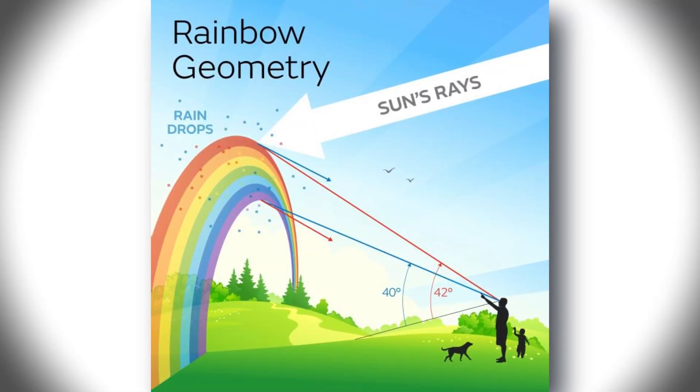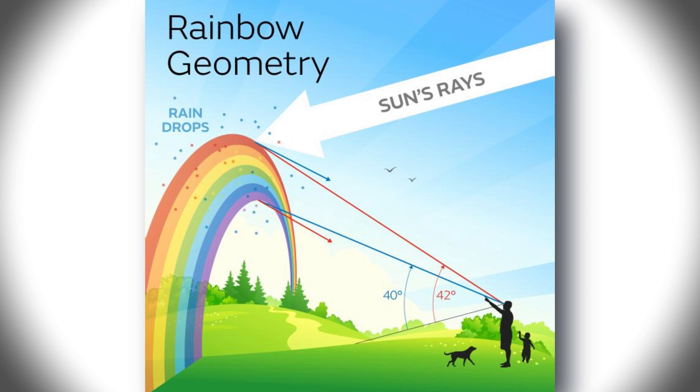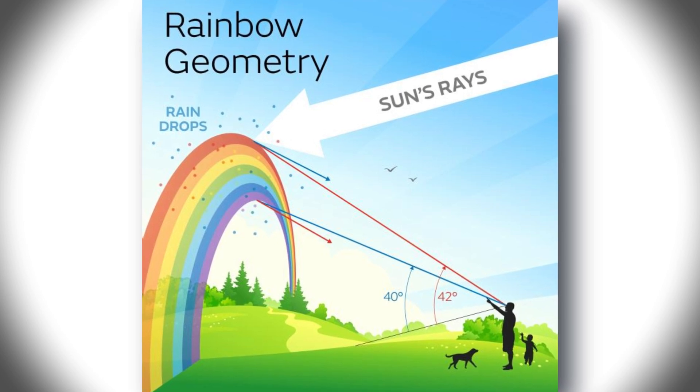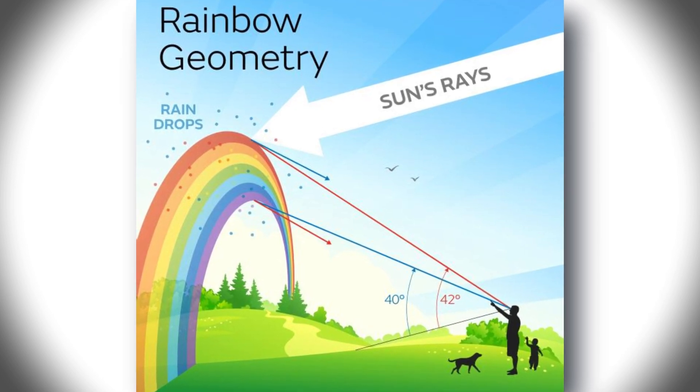This is regardless of the size or shape of the droplets. This is why rainbows always form a circular arc with a radius of 42 degrees around the opposite side to the sun.